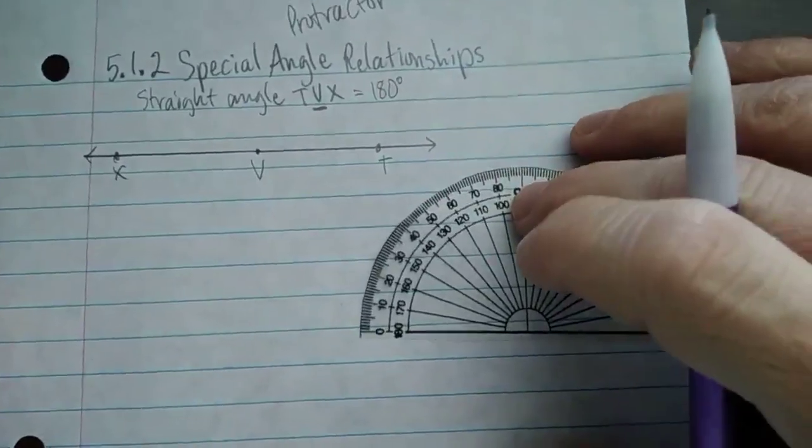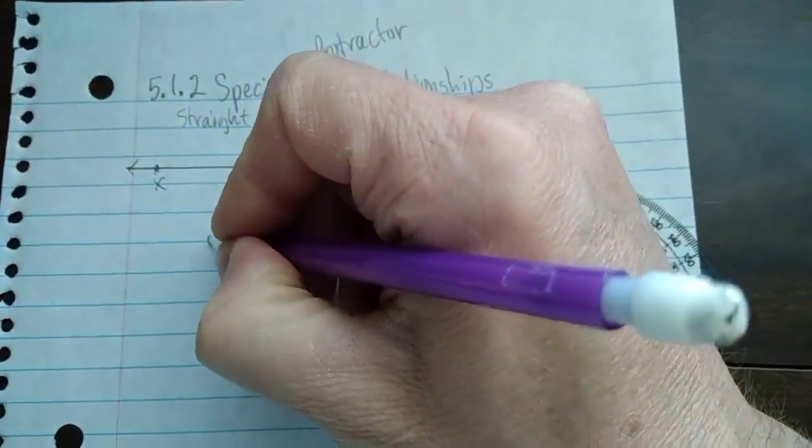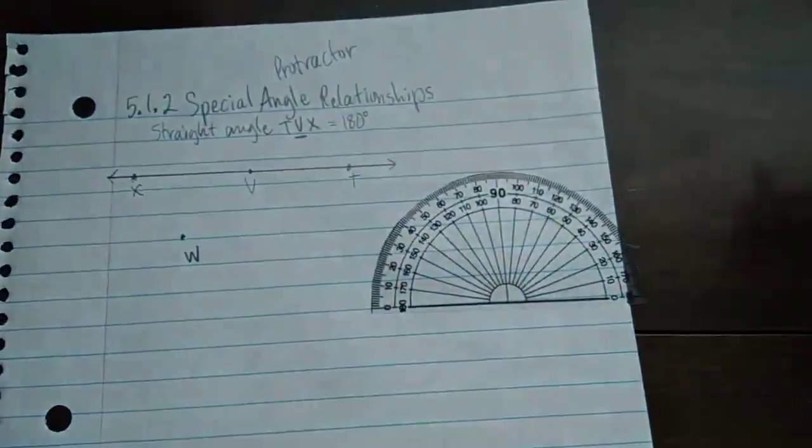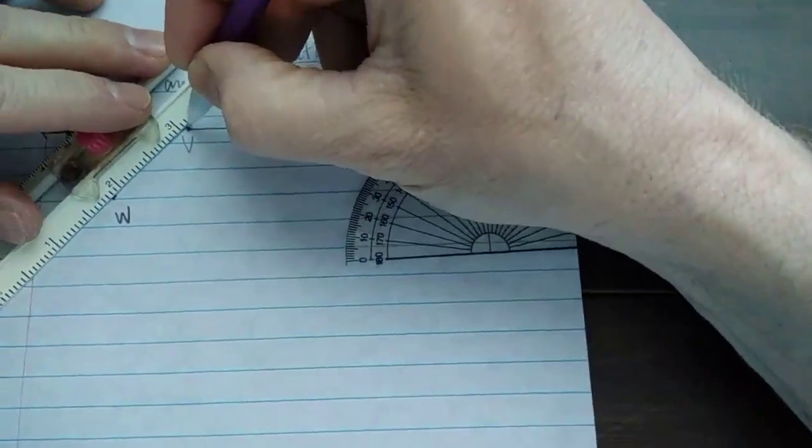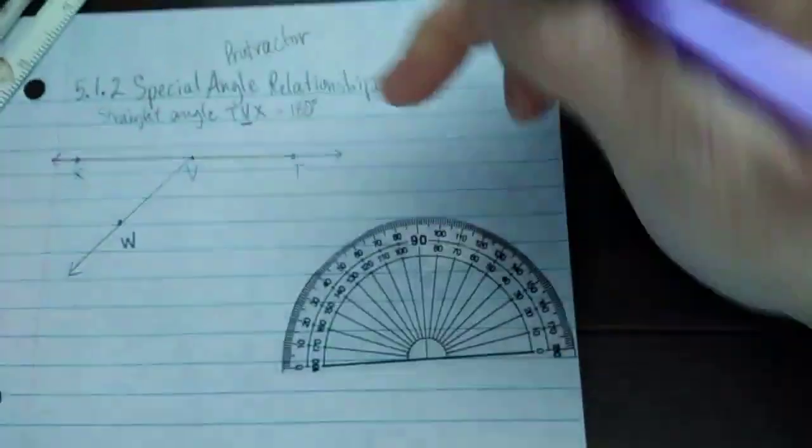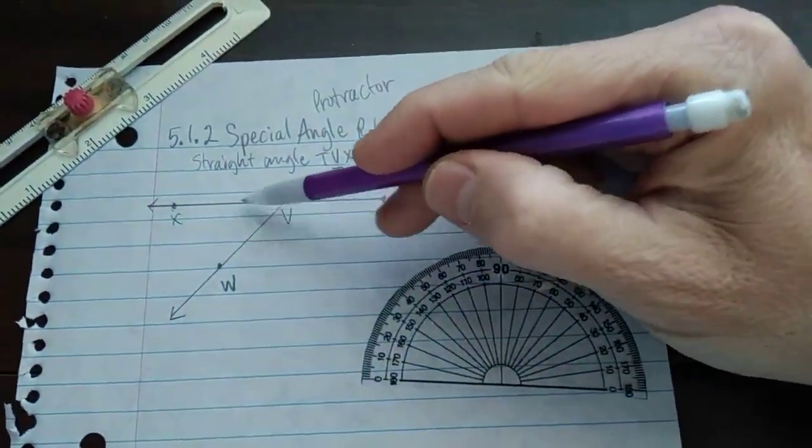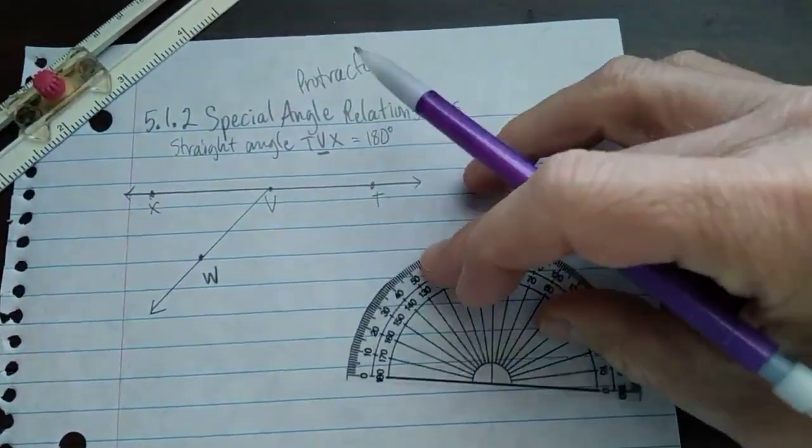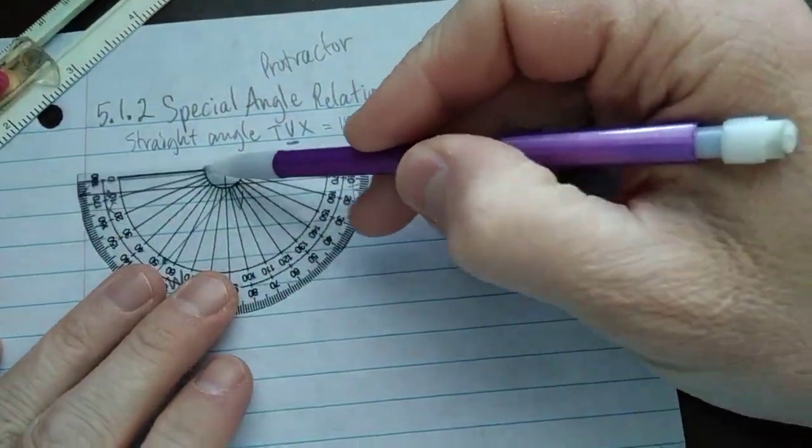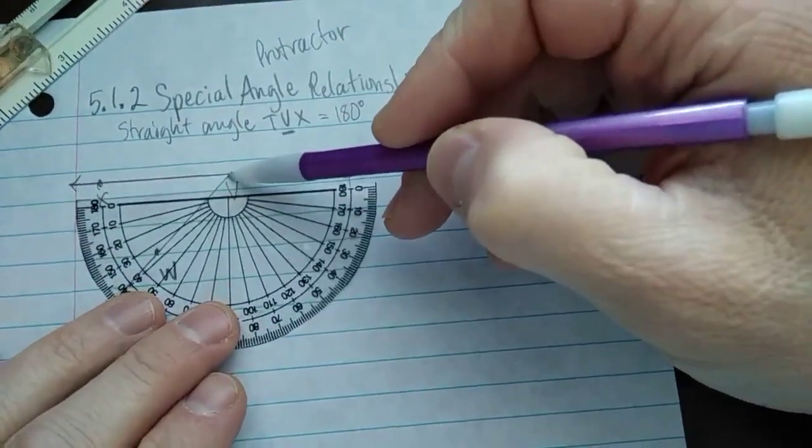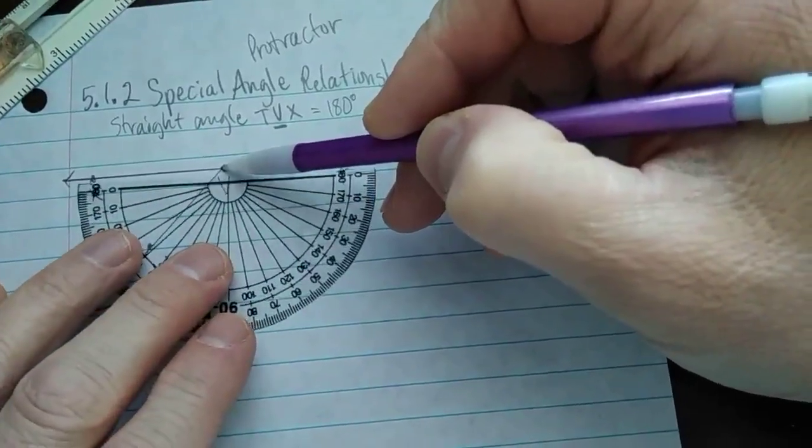But any protractor you have is fine. We're going to draw another dot below this line. We're going to call it W. And go from V through W. And we're going to measure each side of that, each angle. Do you see that there are now two angles? There's this acute angle, and there's this obtuse angle. So since it's below it, we put this mark right here at the vertex, right where this ray, ray VW, takes off from the straight angle.